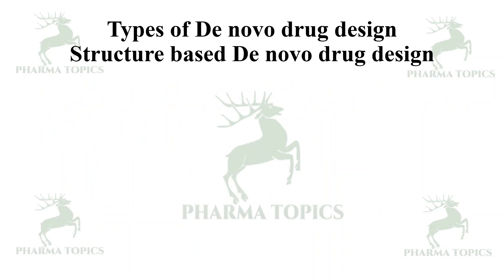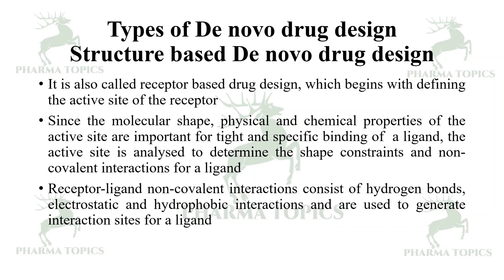Structure-based de novo drug design is also called receptor-based drug design. It is based on the receptor, since the molecular shape and physical and chemical properties of the active site are important for tight and specific binding of the ligand. The active site is analyzed to determine the shape constraints and non-covalent interactions — such as hydrogen bonds, electrostatic interactions, and hydrophobic interactions — for the ligand.